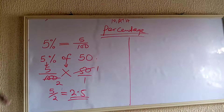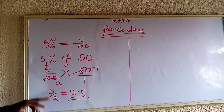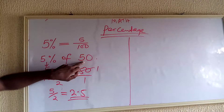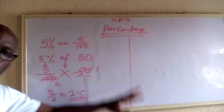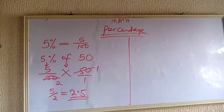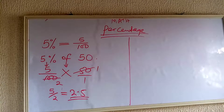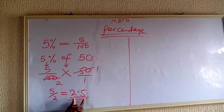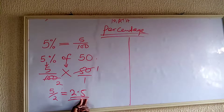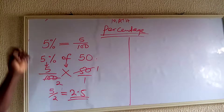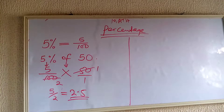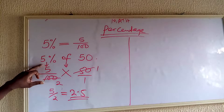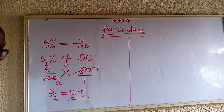The meaning of this is that if we divide 50 into 100 equal portions and we take 5 out of it, then that 5 we are taking out of the 100 portions will be 2.5. So 5% of 50 is 2.5.